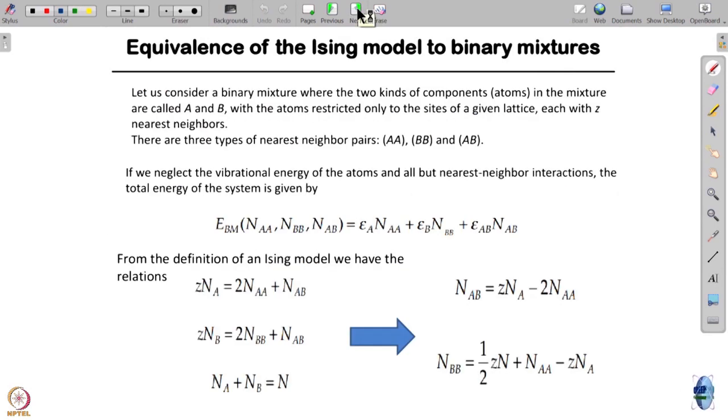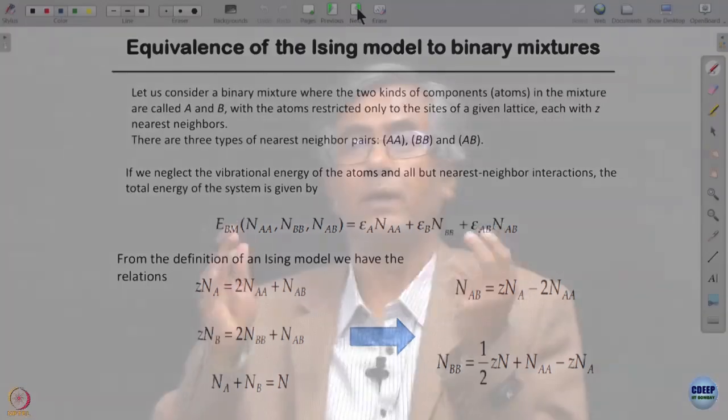I now say spin up is equivalent to A particle, spin down is particle B. In a lattice site, if I have spin up, I have A particle; if spin down, B particle. When AA interaction, spin-spin interaction, if it is favored ferromagnetic interaction, then epsilon AA is more negative. If A and B do not like each other, that is ferromagnetic interaction. If down spins like each other, that is anti-ferromagnetic interaction.